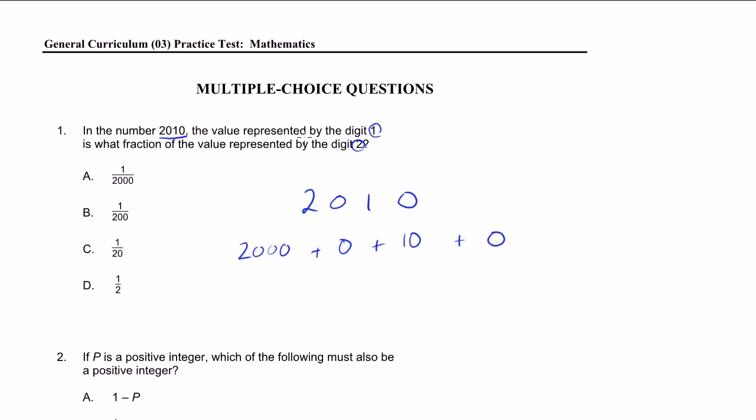They're saying the value represented by the digit 1, well, the value represented by the digit 1 is 10, is what fraction of the value represented by the digit 2? The digit 2 represents 2,000. So the fraction is going to be the 10 divided by what the 2 represents, 2,000. The 1 represents 10, the 2 represents 2,000. We can cancel out a 0 right there. We get 1 over 200, which is choice B.